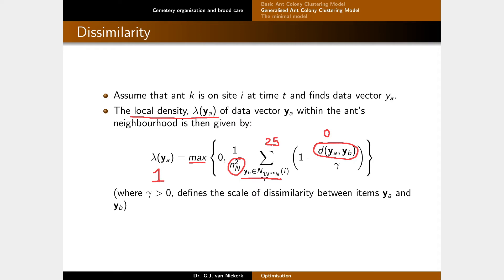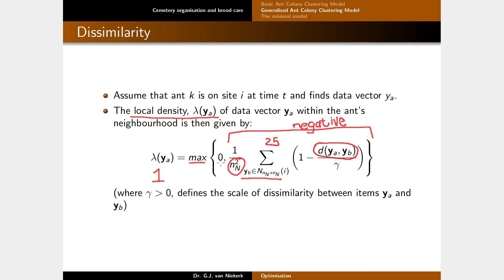At the other extreme, if all yb's in the patch are very different from ya, the dissimilarity is very large — say 1000. 1000 divided by the constant is still some large value, and 1 minus that gives a negative number. Summing a bunch of negatives and dividing by the patch size gives a negative result. The max function returns the maximum between 0 and this negative number — so we get 0, meaning ya is unique within that patch.